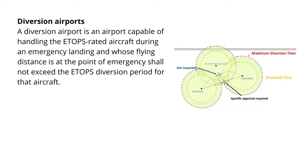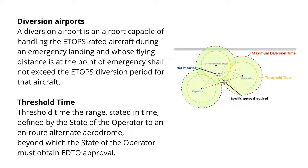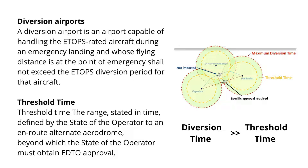A diversion airport is an airport capable of handling the ETOPS-rated aircraft during an emergency landing, and whose flying distance at the point of emergency shall not exceed the ETOPS diversion period of that airport. Threshold time is the range stated in time, defined by the state of operator to an en-route alternate aerodrome, beyond which the state of operator must obtain EDTO approval. When the diversion time exceeds the threshold time, the operation is considered to be an Extended Diversion Time Operation.